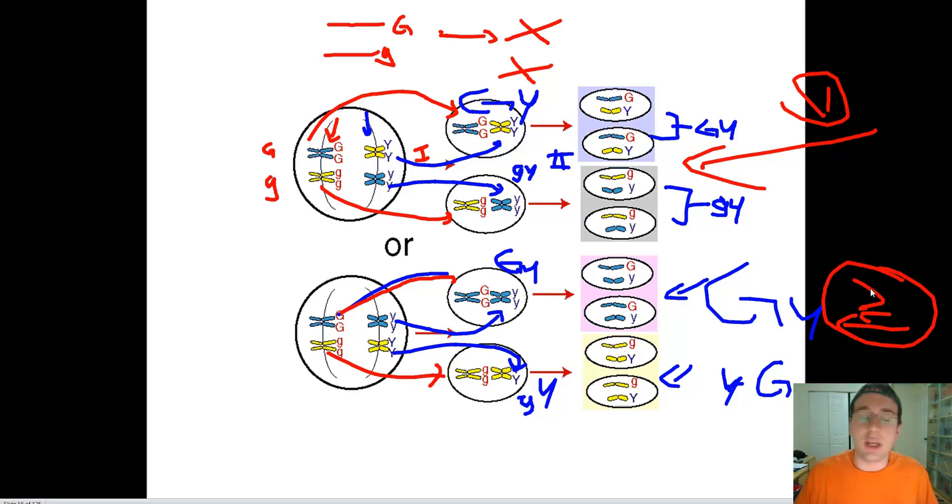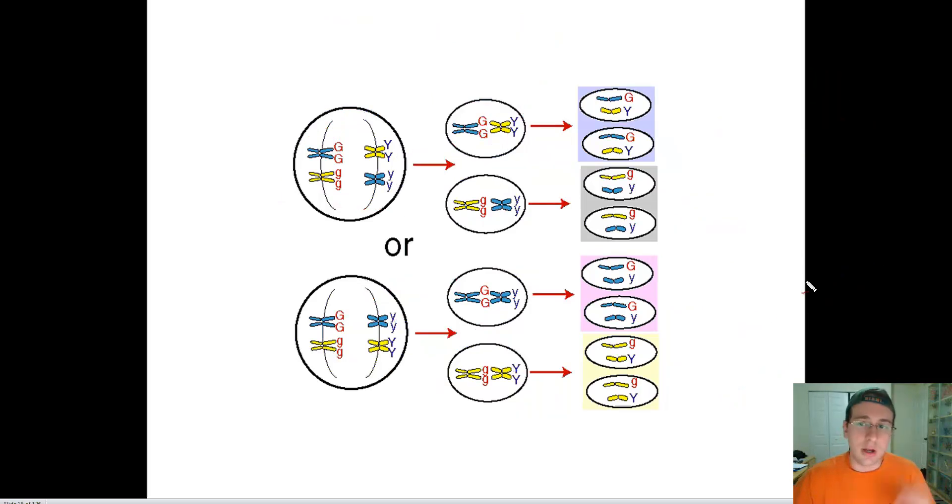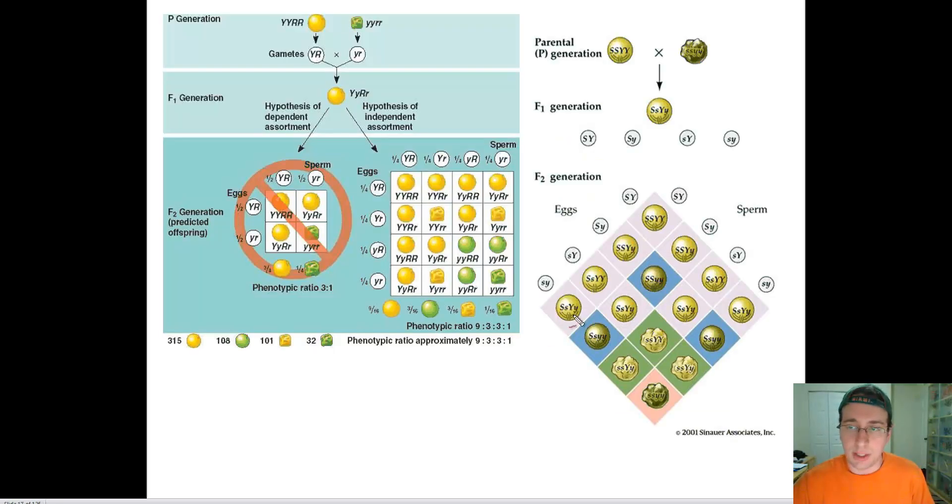Mendel answered this question and said no, there's independent assortment of genes. In other words, these factors sort independently, which means there's an equal chance to get something that looks like that as to get something that looks like this. However, if something like number one was happening every time - in other words the traits were always together - then it raises the question: is there something at play here that contradicts Mendel's theory of inheritance?